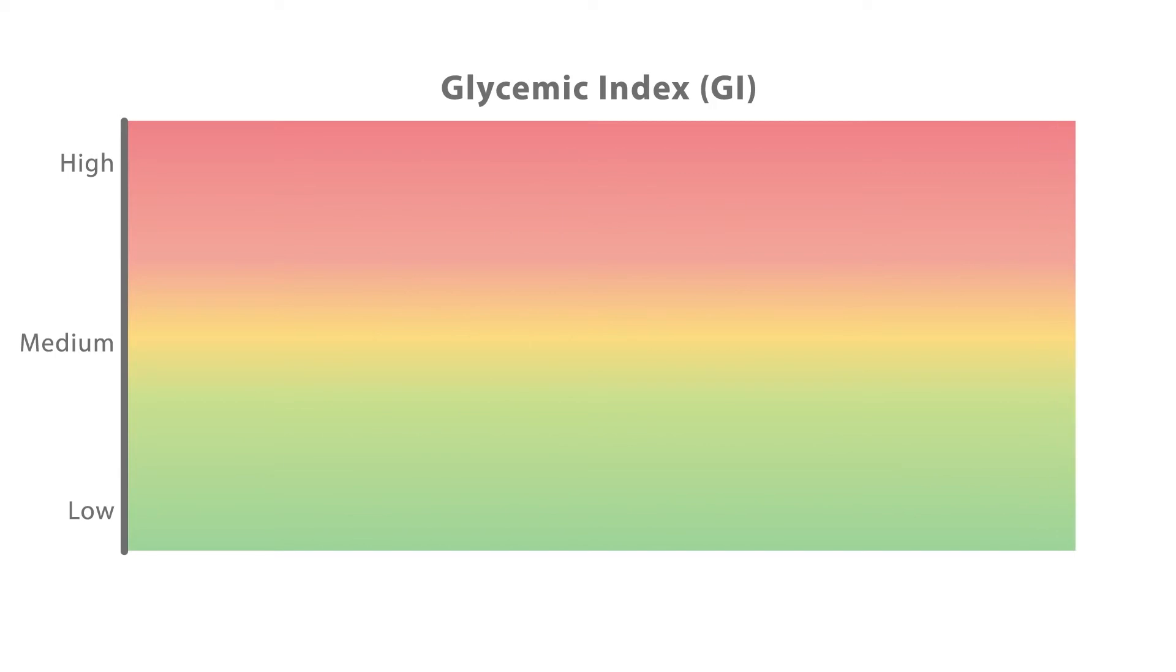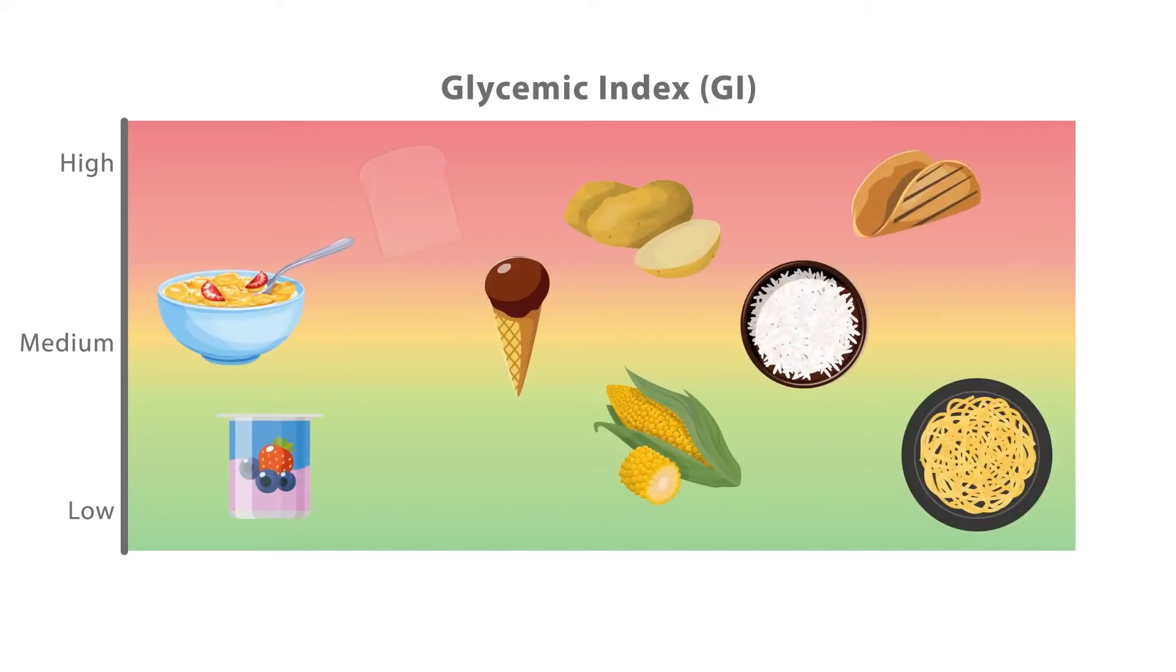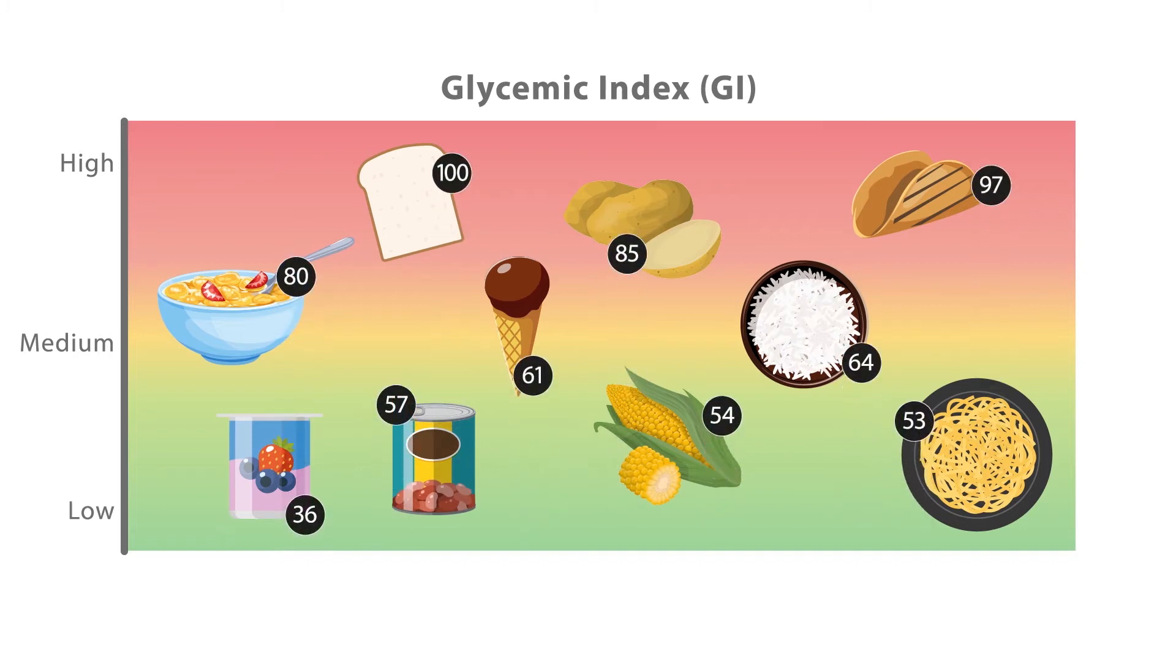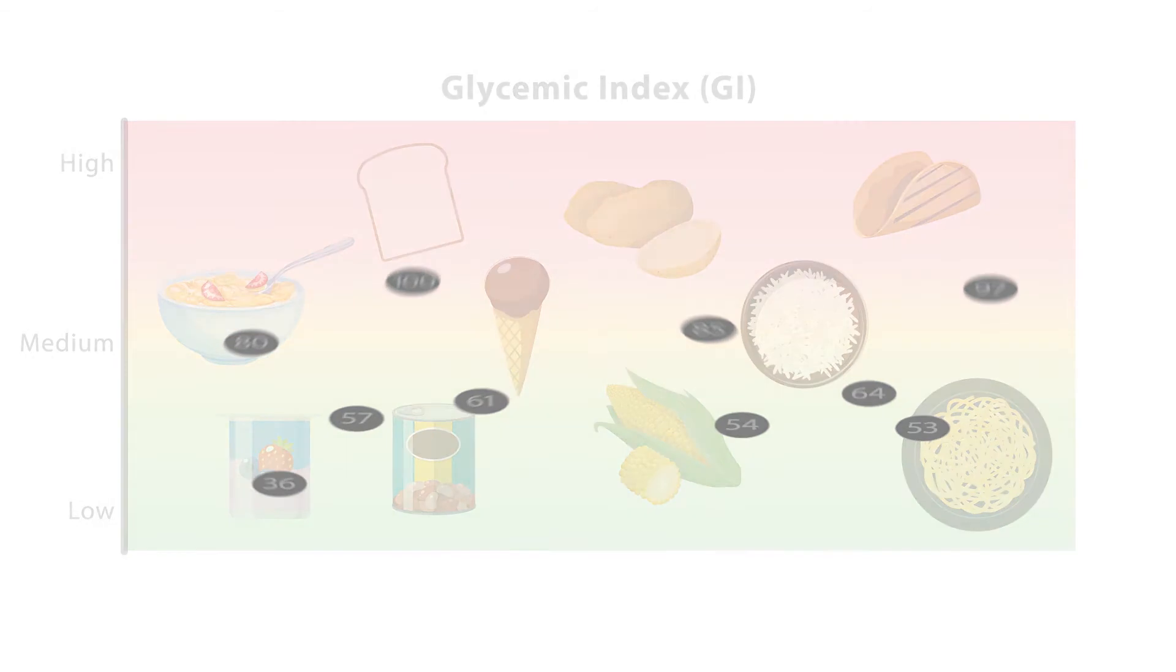All foods have a specific glucose impact on our bodies. This impact is measured by a glycemic index number. The higher the glycemic index number, the faster a carbohydrate turns into glucose and the more significant the impact is on our bodies.